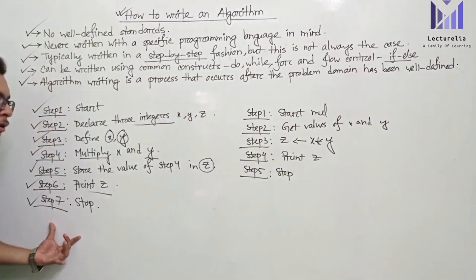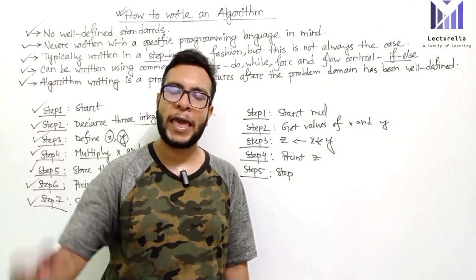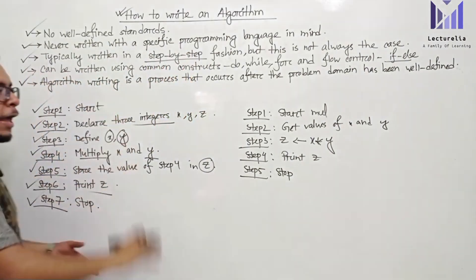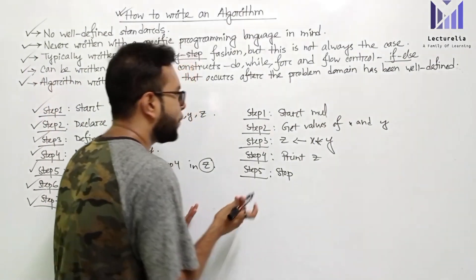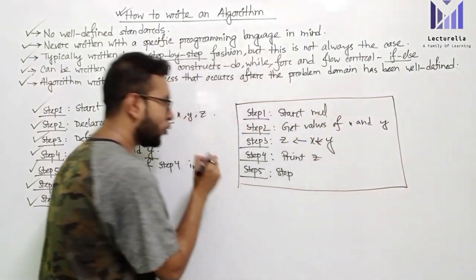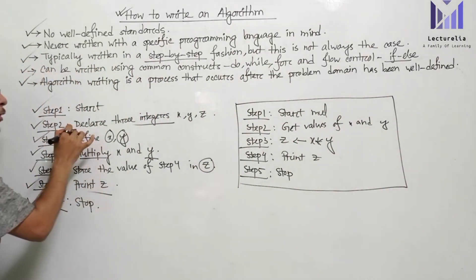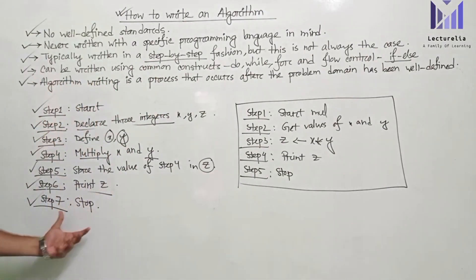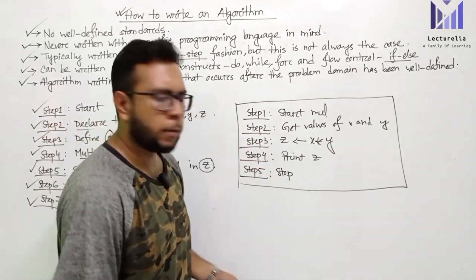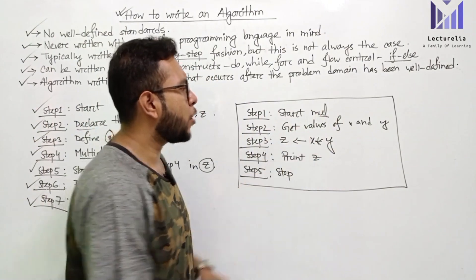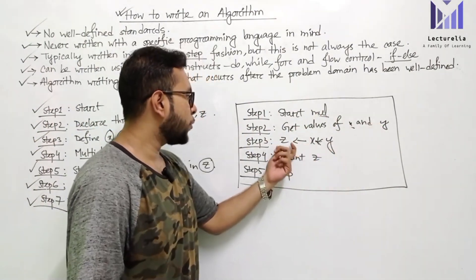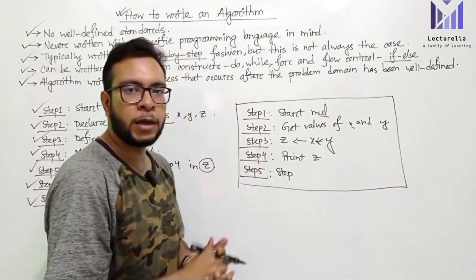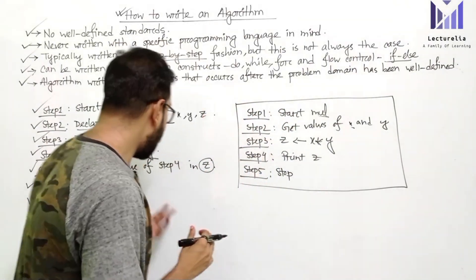For a given problem, one algorithm equals one solution — but for a single problem, multiple solutions are possible. We have to choose the one that is best. The best algorithm is one with a clear and good description. If we know the values of x and y, the algorithm does its work and the program implements it, making it easy to test. So it is appropriate to choose the best one.